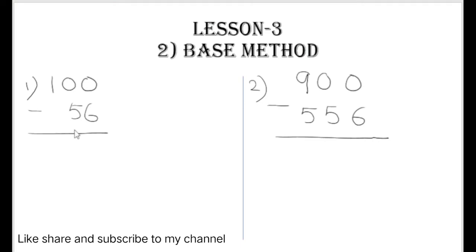In this method, the base number means the number will be like 10. In base method, the numbers will be like subtraction will be from 10, 100, 1000, one lakh, like this. This type of number, so this method is known as base method.